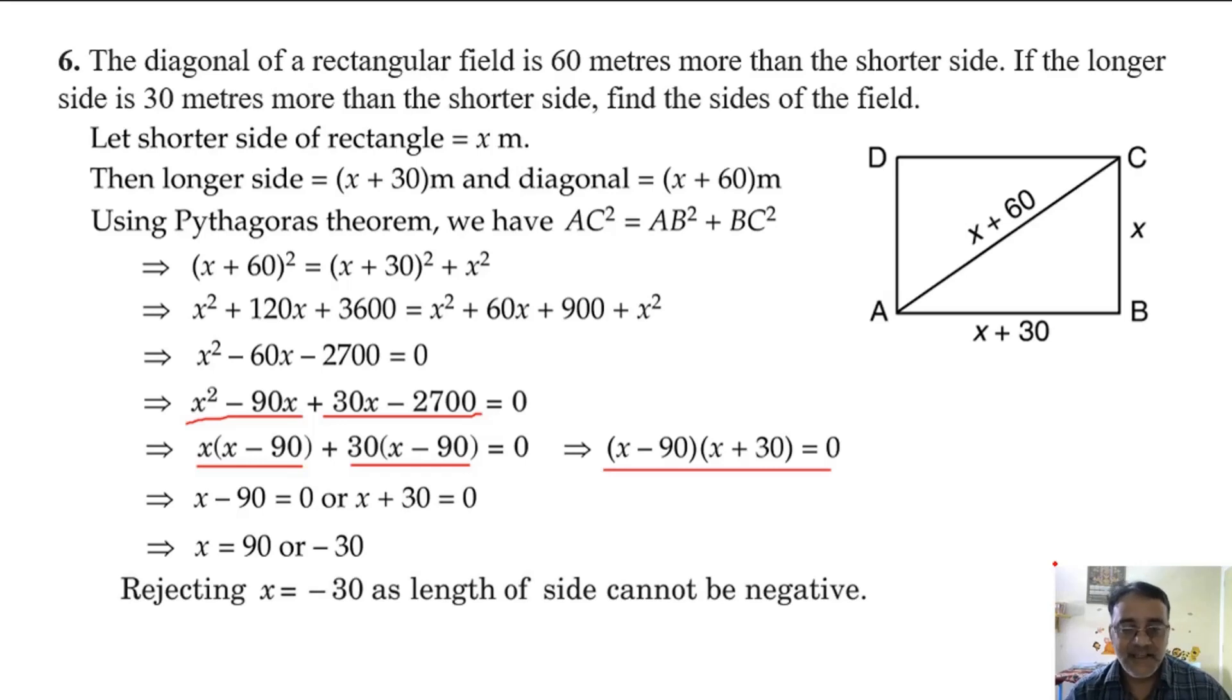Because side cannot be negative. Rejecting x equals minus 30 as length of side cannot be negative.